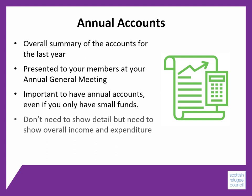Accounts don't need to show the detail of every transaction, but they need to show the overall income and expenditure for the whole year, and this is usually done under broad headings. For income, it could be grants and trusts or donations. And for expenditure, it could be split into salaries, project costs, running costs, events, and volunteering costs.